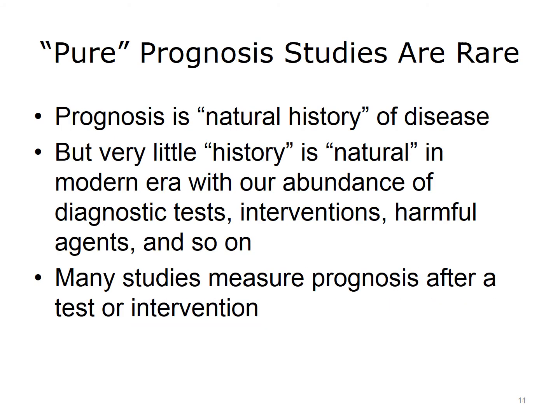Let's make a few comments about prognosis. One of the important things to know about prognosis is that it's actually hard to do a good prognosis study because prognosis is the natural history of a disease — how the disease actually unfolds. In this day and age, there's very little in the history of a disease that is natural. In almost every disease, we intervene in some way, whether through diagnostic tests or treatments. Many studies end up measuring prognosis after some form of test or intervention.